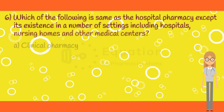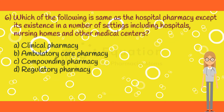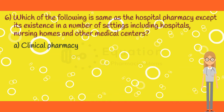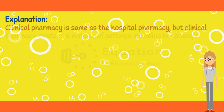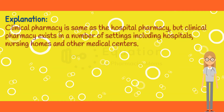Question 6. Which of the following is same as the hospital pharmacy except its existence in a number of settings including hospitals, nursing homes, and other medical centers? Option A: Clinical pharmacy. Option B: Ambulatory care pharmacy. Option C: Compounding pharmacy. Option D: Regulatory pharmacy. The correct answer is option A. Clinical pharmacy is same as the hospital pharmacy, but clinical pharmacy exists in a number of settings including hospitals, nursing homes, and other medical centers.